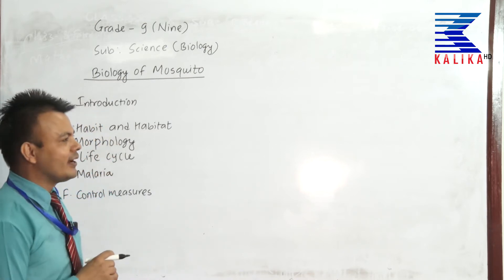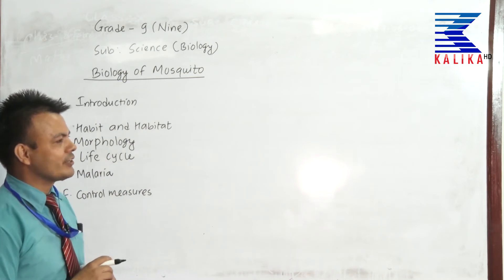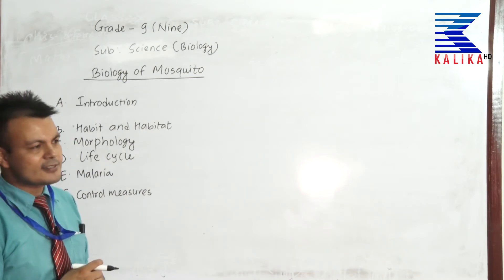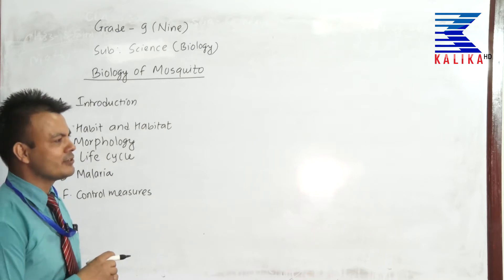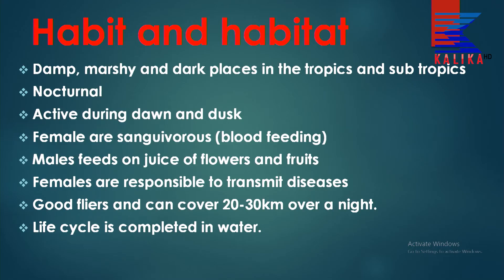Mosquitoes are good flyers and can cover 20 to 30 kilometers in a night. The life cycle is completed in water — all the stages are aquatic except the adult. The egg, larva, and pupa are aquatic and are found in dark, marshy and moist places, and where there is full of vegetation.